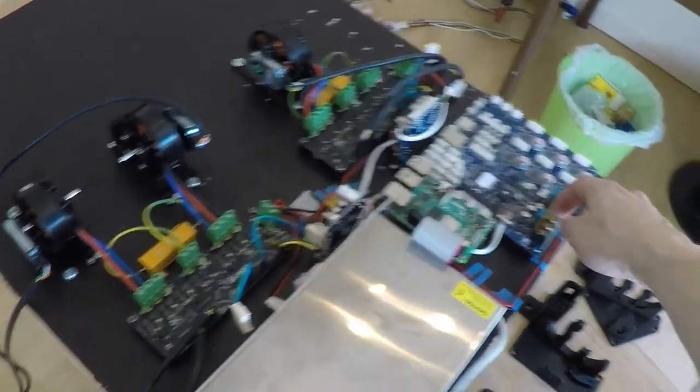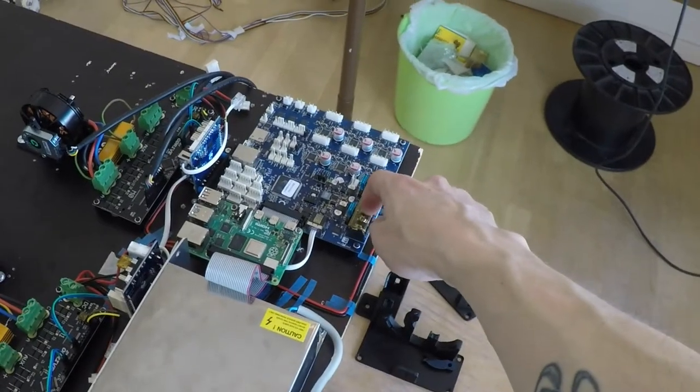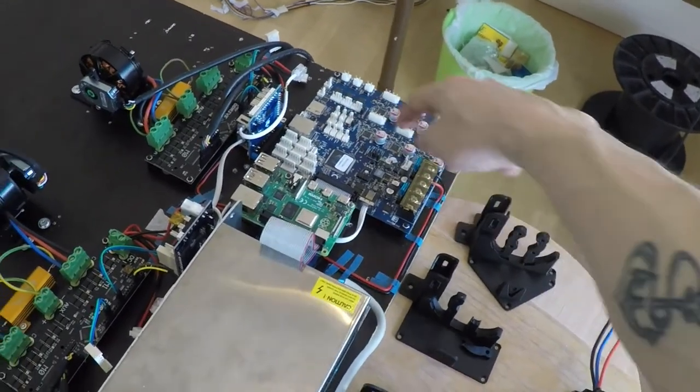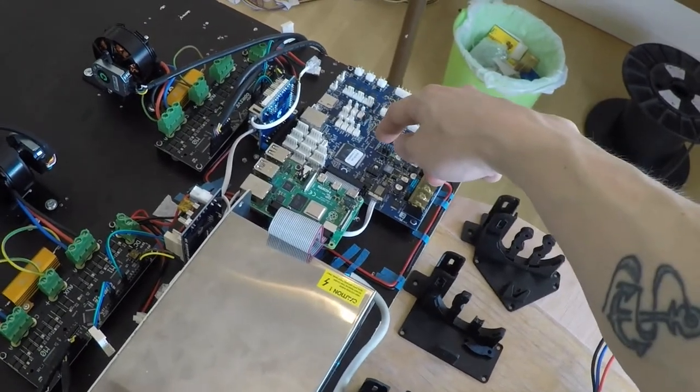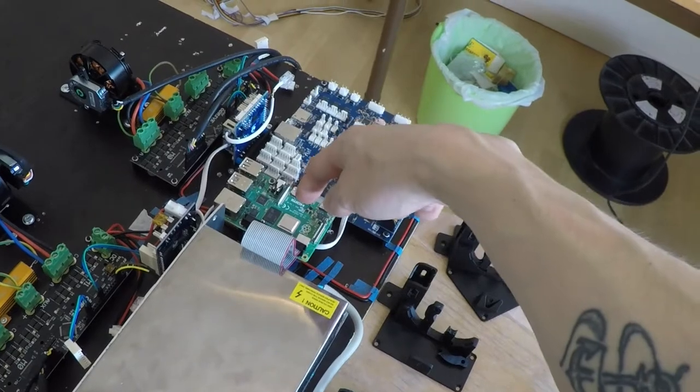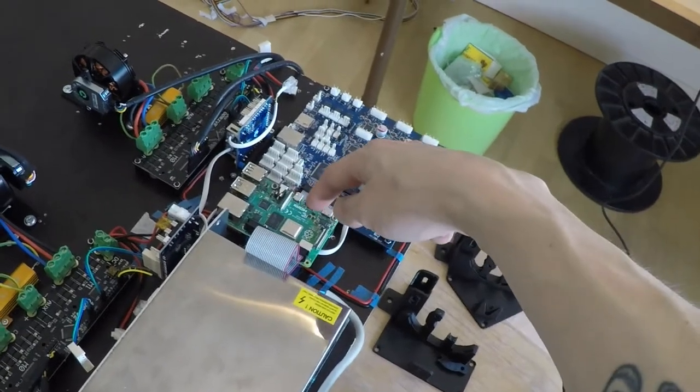There's a Duet 3 circuit board that'll run the RepRap firmware and compute the movement. There's a Raspberry Pi here which gives the web interface, the user interface.